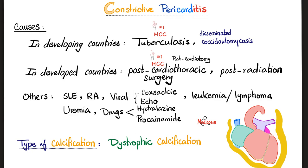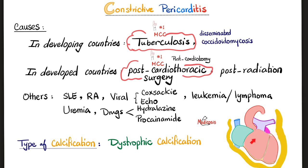What are the causes of constrictive pericarditis? On your exam, they love these three: tuberculosis — never forget this; post-cardiothoracic surgery, such as after bypass or cardiotomy, because reaching inside the heart requires entering the pericardium; and post-radiation exposure. These are the three main causes you will be tested on.